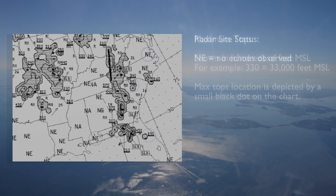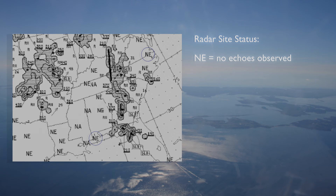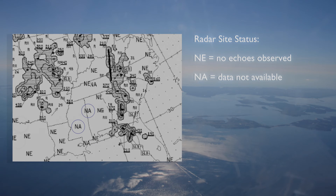If a radar site has the letters NE printed over it, it means no echoes were observed at this radar site. NA means the site is not available, and OM means it is out for maintenance.